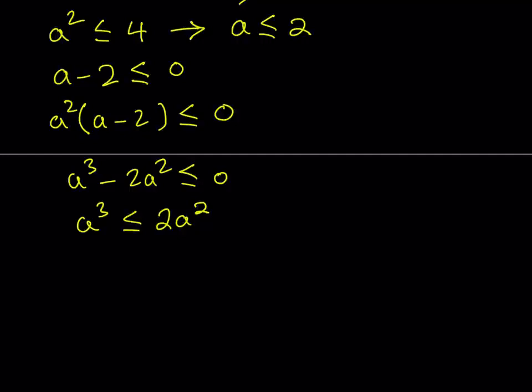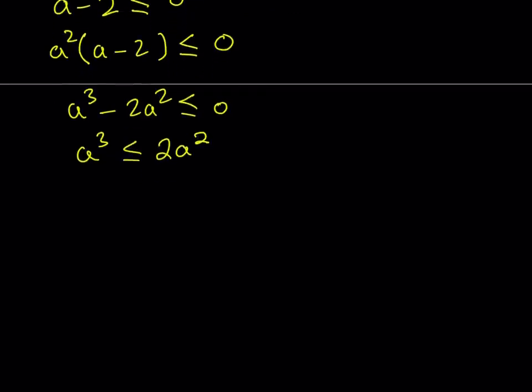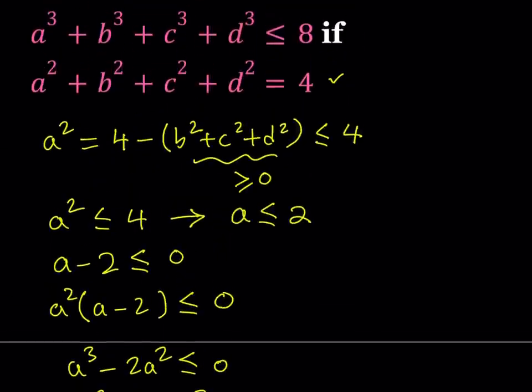Since this is true for any of these variables, it doesn't matter which one you picked first. A, B, C, D don't matter. So I can say the same thing for B. B cubed is less than or equal to 2b squared. C cubed is less than or equal to 2c squared. And D cubed is less than or equal to 2d squared. Notice that we're trying to prove that the sum of the cubes is less than or equal to 8, and we're going to get this just by adding these inequalities.